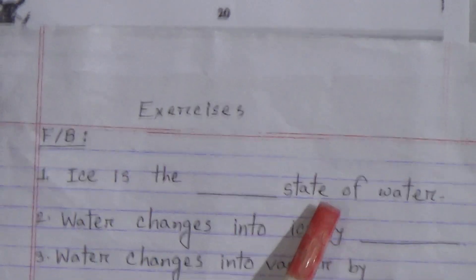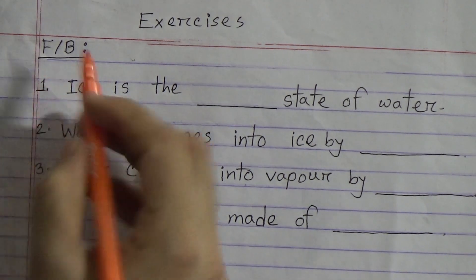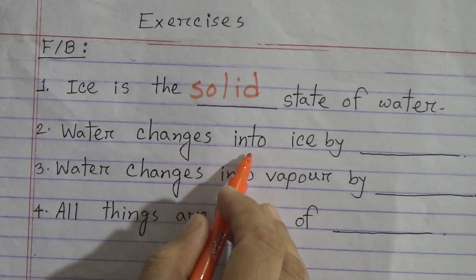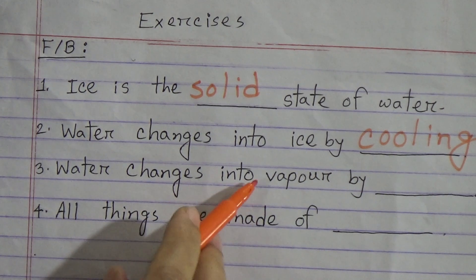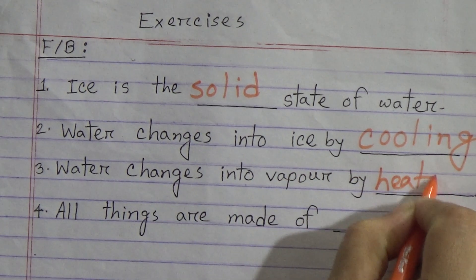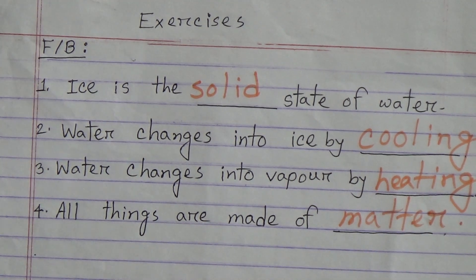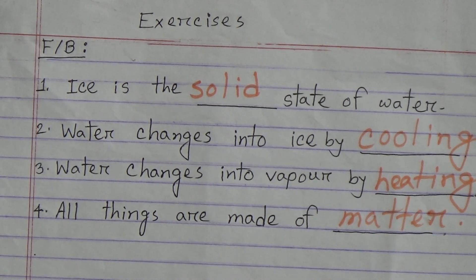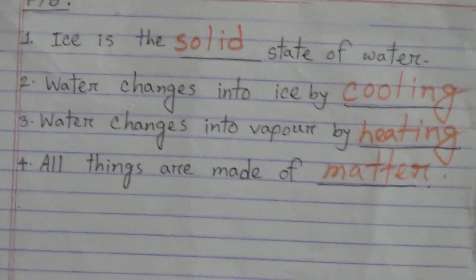Now come to the exercise — fill in the blanks. Number one: ice is the solid state of water. Number two: water changes into ice by cooling. Number three: water changes into vapor by heating. Number four: all things are made of matter.